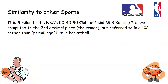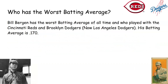Similarity to other sports: batting average is similar to the NBA's 50-40-90 club. Official MLB batting percentages are computed to the third decimal place — thousandths — but referred to as a percentage rather than permillage as in basketball. The player with the worst batting average of all time is Bill Bergen, who played with the Braves and Dodgers. His batting average was .170.